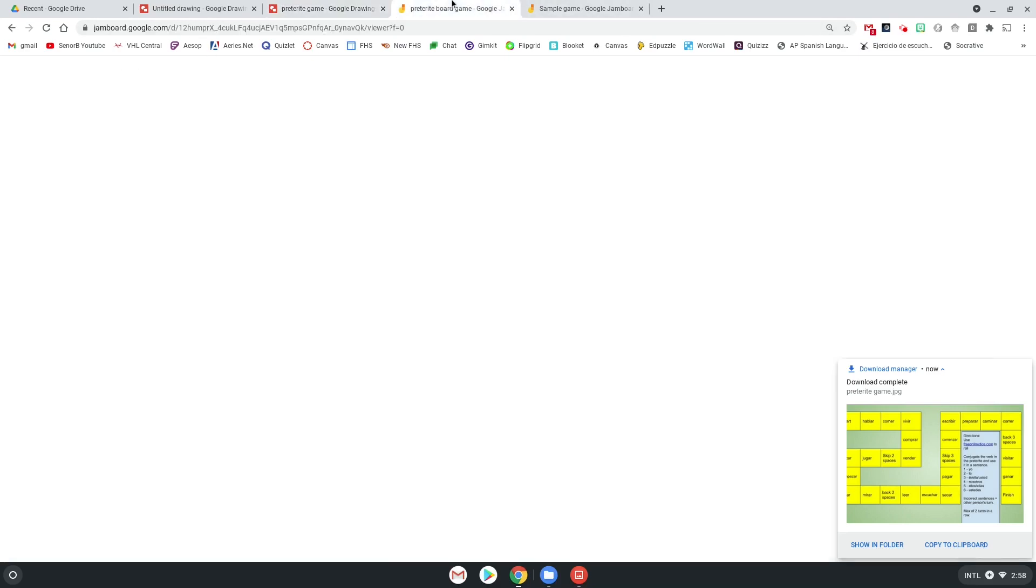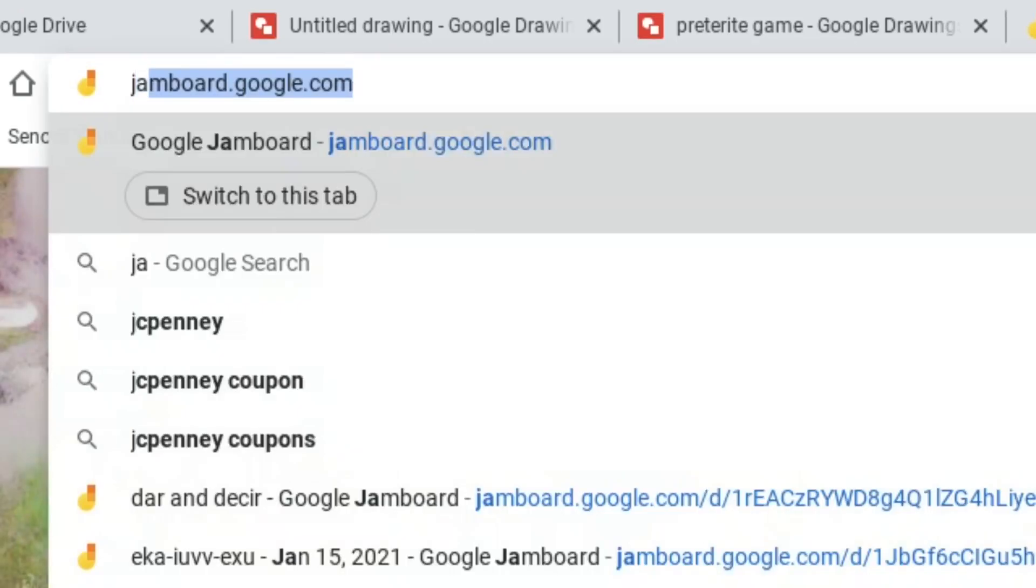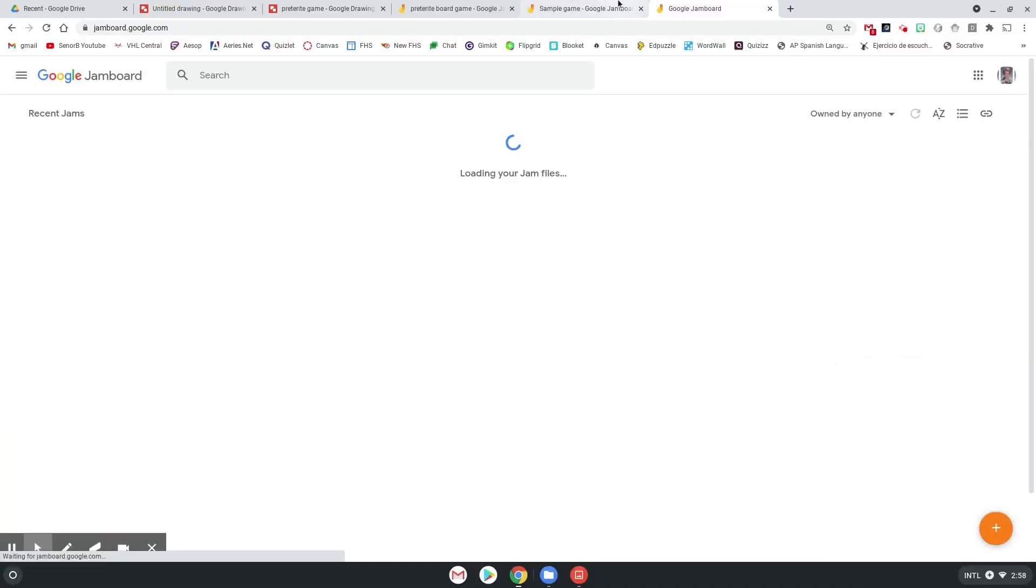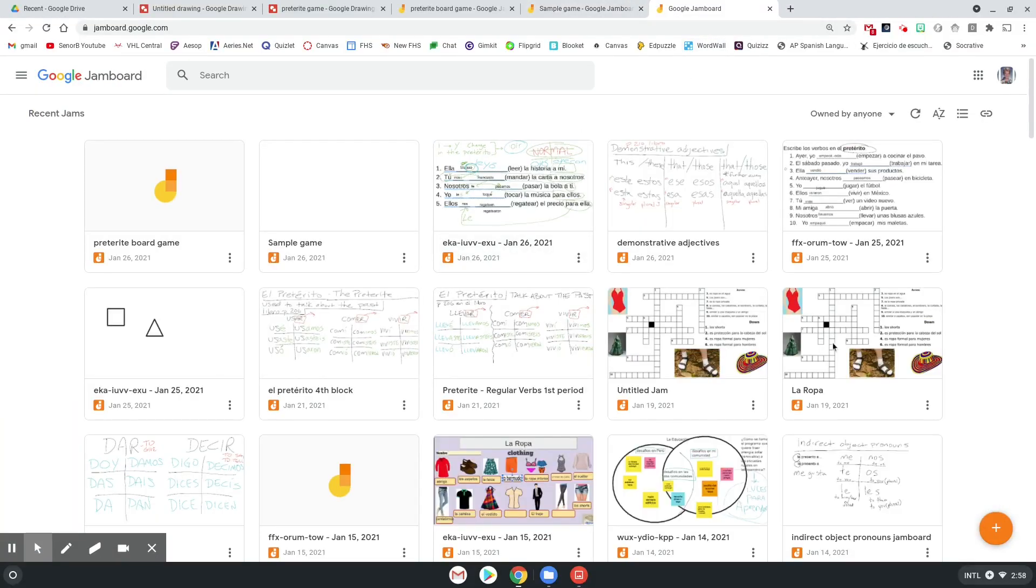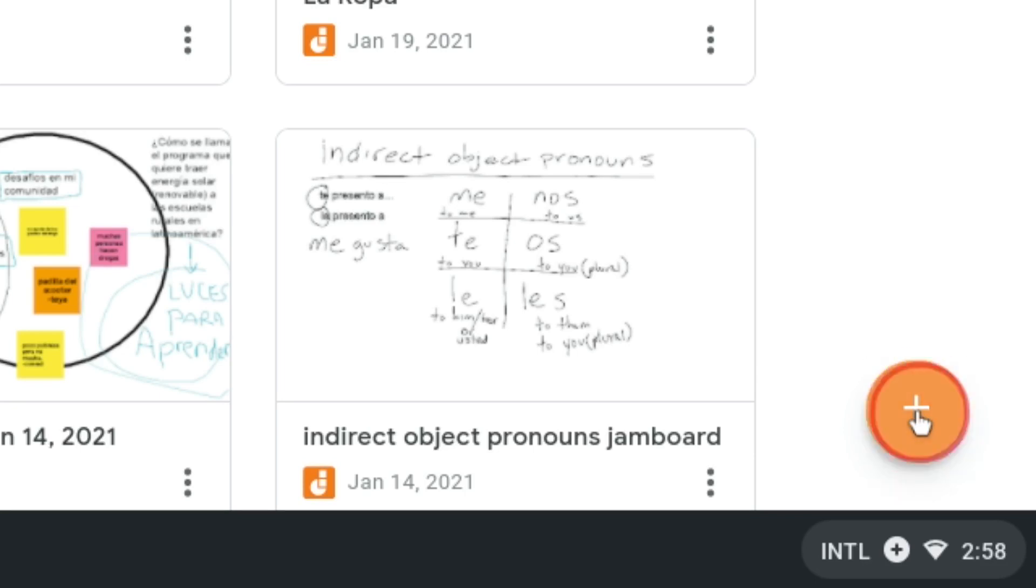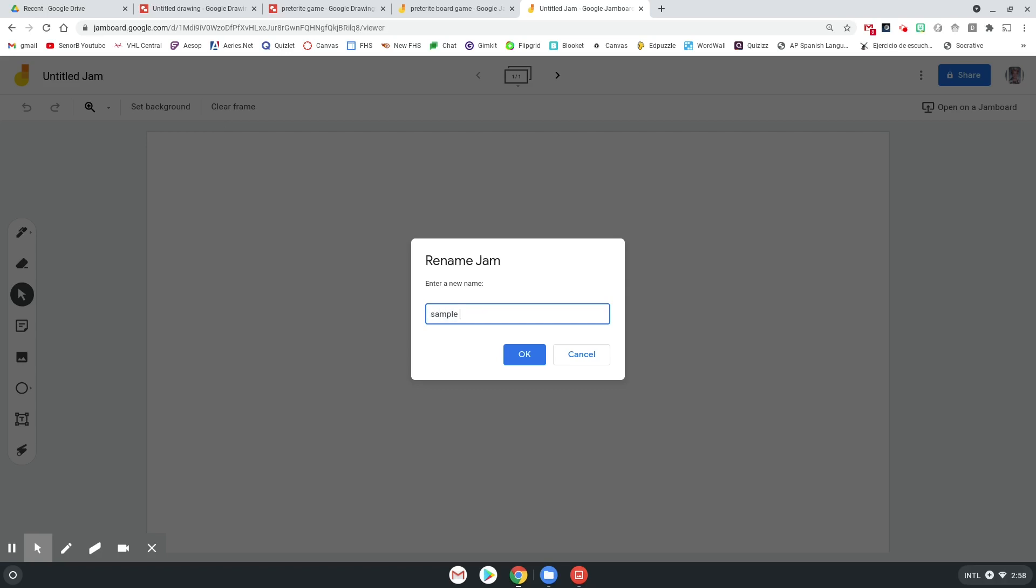Now I'm going to go to jamboard.google.com. And I'm going to click on the little plus button over here to make a new Jam. I'm going to call this Sample Jam Game.